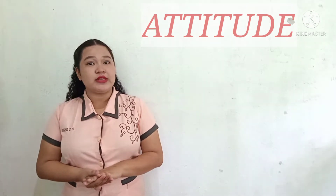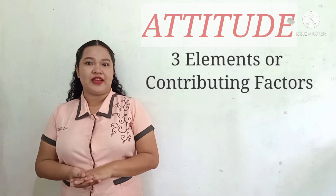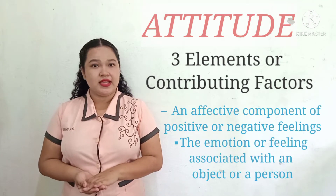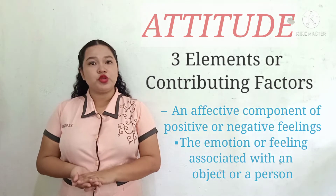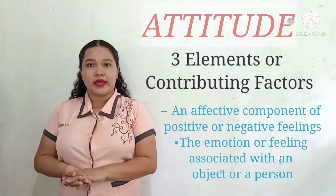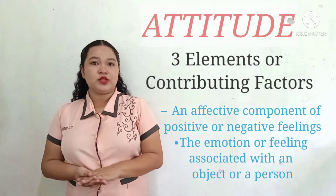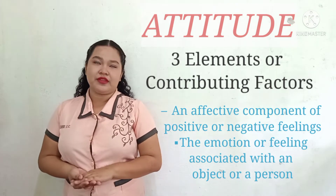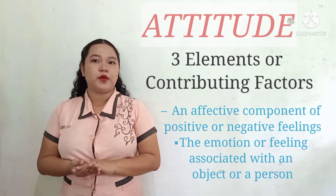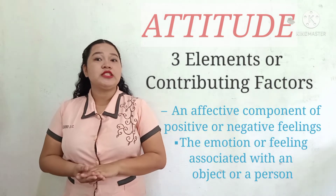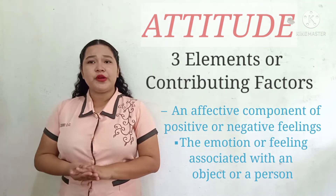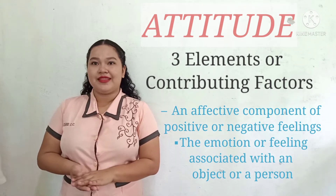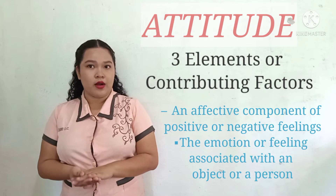So attitude consists of three elements or contributing factors. First is the affective component of positive or negative feelings. It consists of the emotion or feelings associated with an object or a person, dealing with feelings or emotions brought to the surface about something such as fear or hate. For example, someone might have the attitude that they love all babies because they are cute, or that they hate smoking because it is harmful to health.